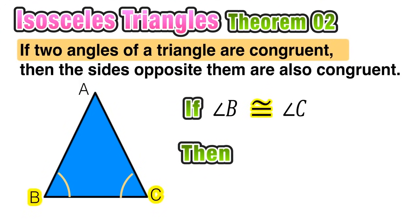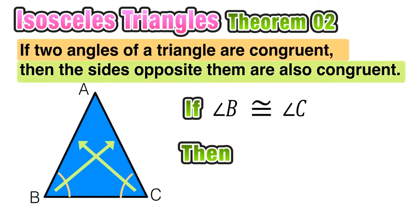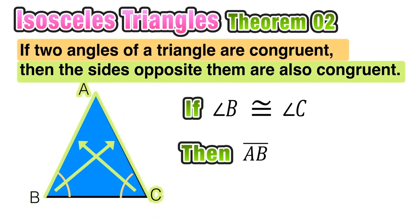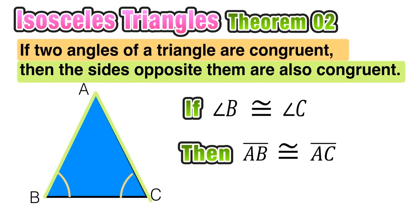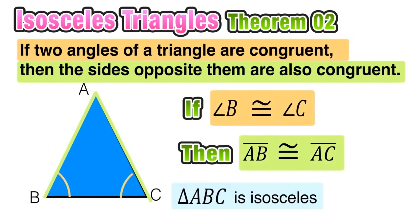...in this case angle B is congruent to angle C — the base angles — then the sides opposite those angles are also congruent. That means side AB would have to be congruent to side AC. And because of this relationship, we can conclude that triangle ABC is isosceles.